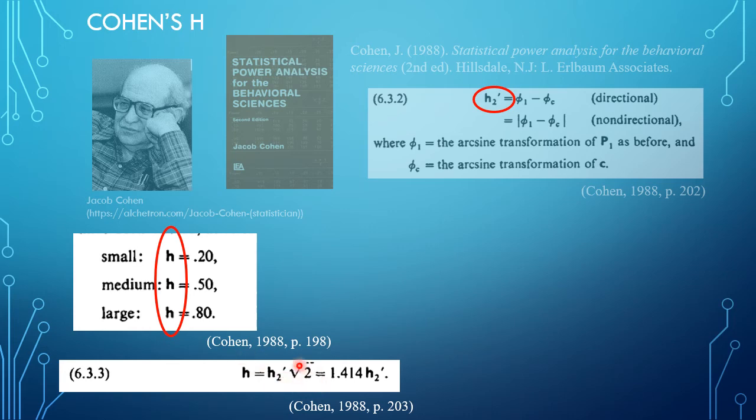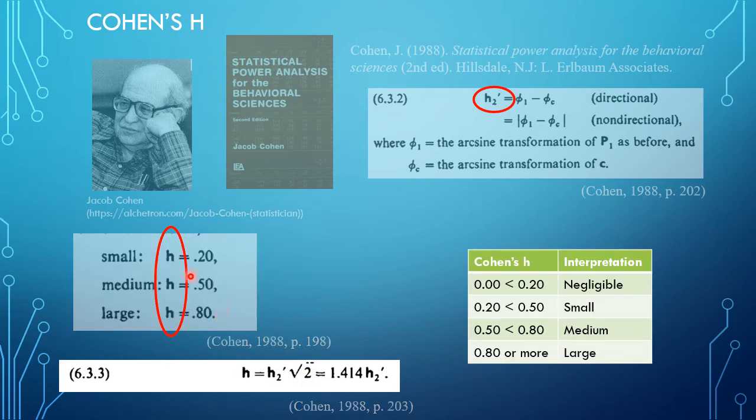Now, I would think that small is starting at 0.20, so anything below that is probably negligible. Between 0.2 and 0.5 is small, between 0.5 and 0.8 is medium, and above 0.8 is large.